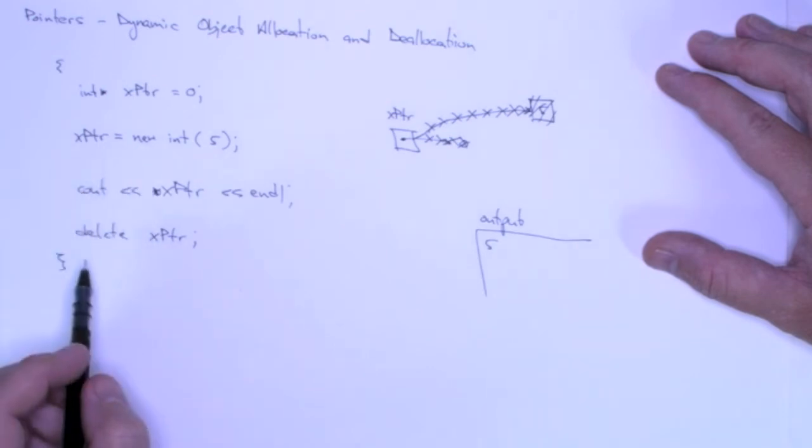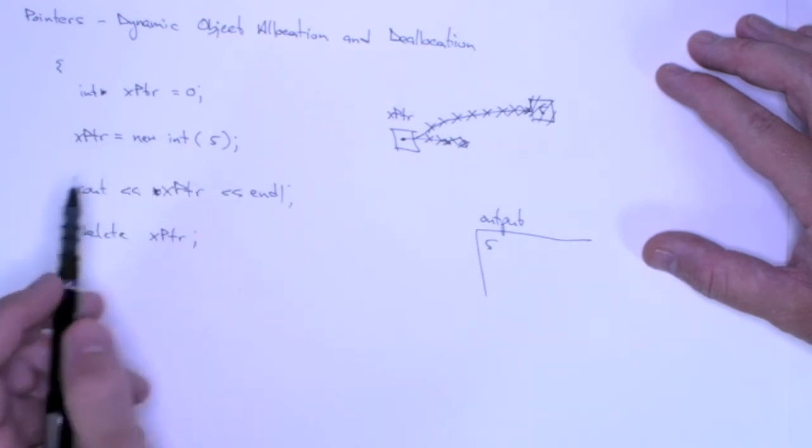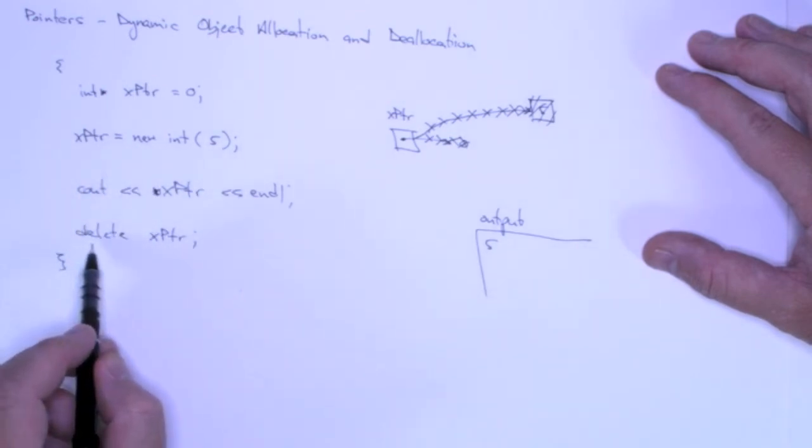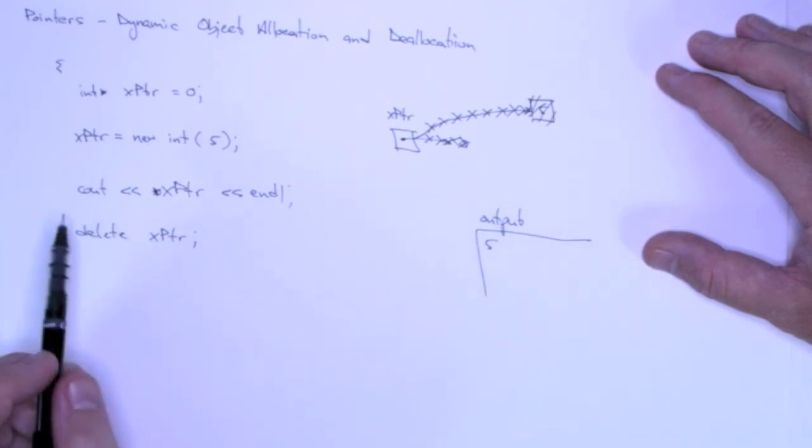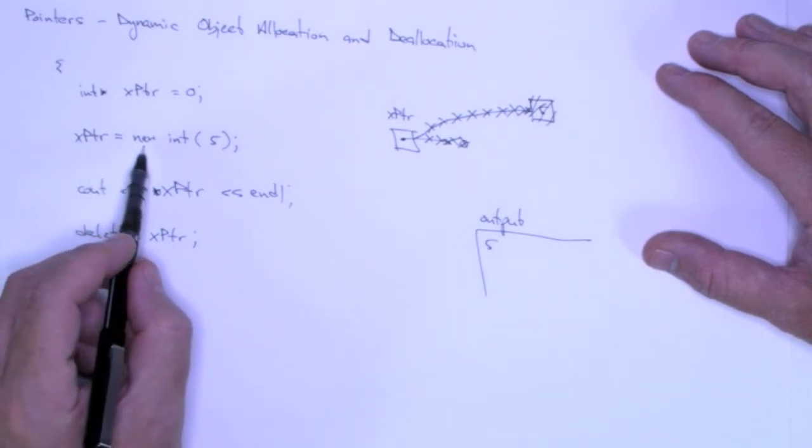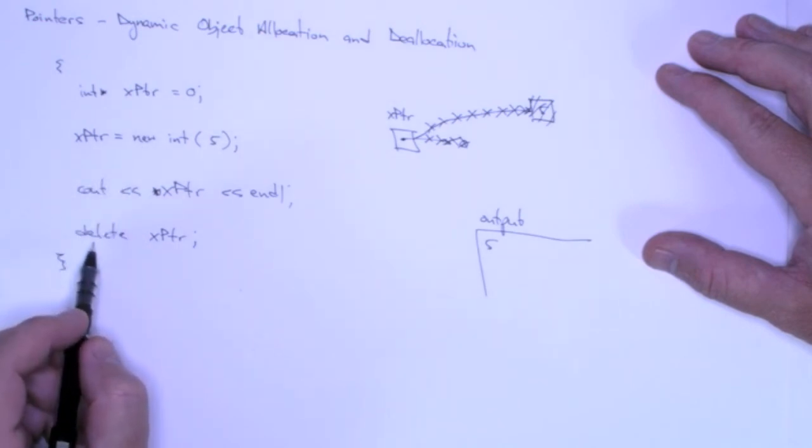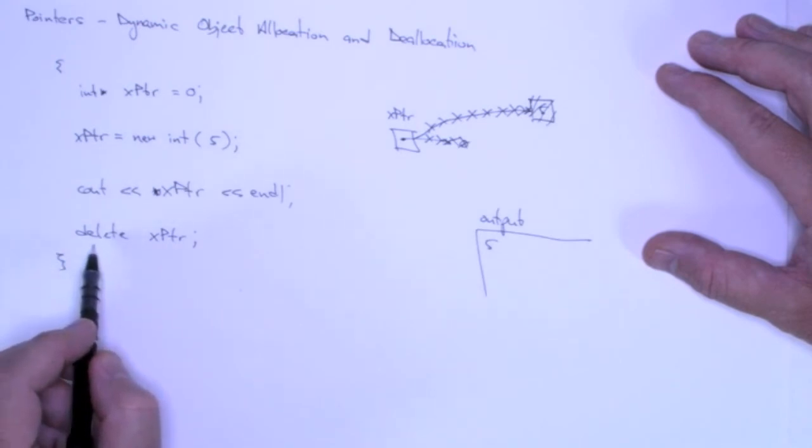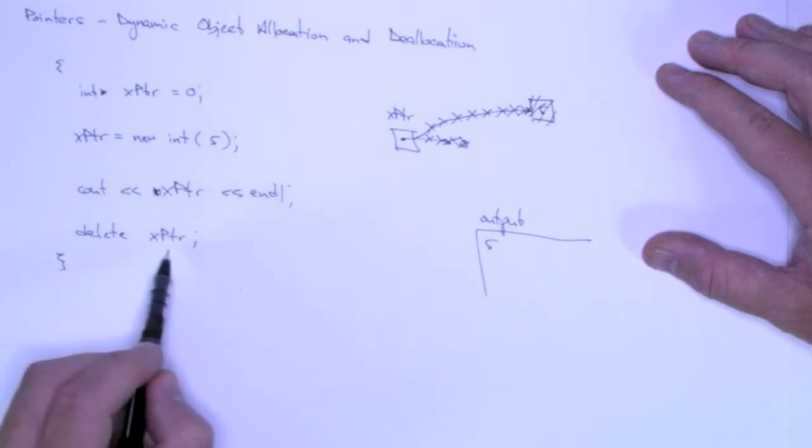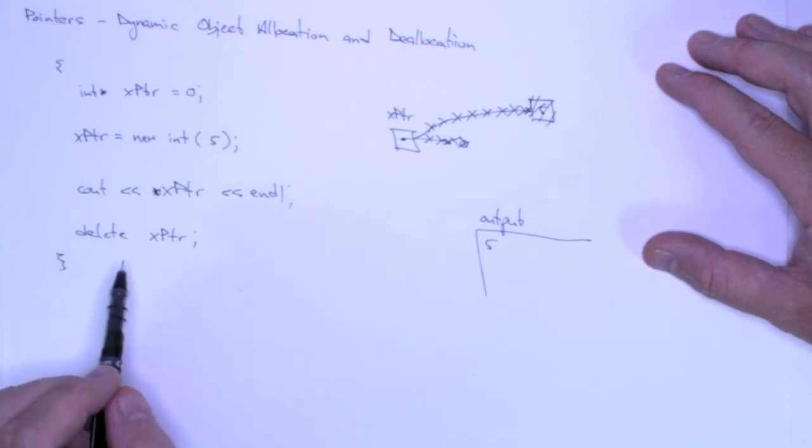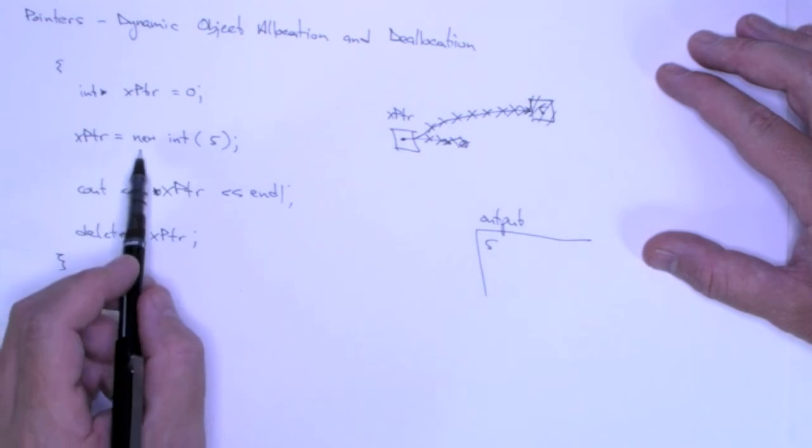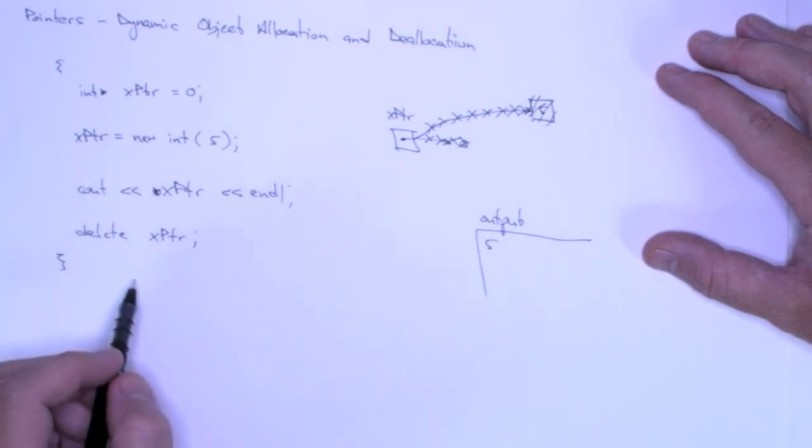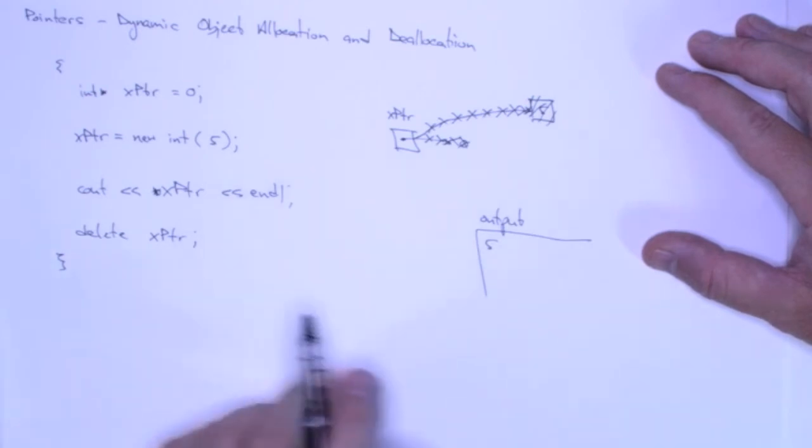Anything that we dynamically allocate, we have to deallocate using the delete operator. And the general rule is that for every new, there must be a corresponding delete. Now it's simple in this case, because here is new, we know that we're finished with the integer 5, and so we can delete it. In a complex program, this gets much trickier. But the general rule is, for every new, there must be a corresponding delete, and then the tricky part is, at some point during the execution of the program.